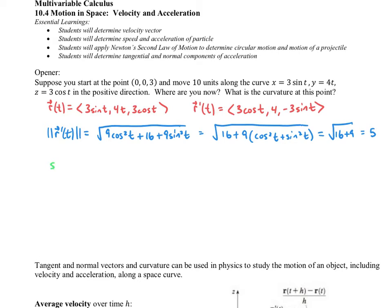The next step is to look at the arc length with respect to T, which is the integral from 0 up to some value T. We're looking at the point (0, 0, 3), and comparing with the x, y, z values in the given problem, we can see that T equals 0 satisfies that point. So we integrate 5 from 0 to T using du as a placeholder, and that gives us the antiderivative evaluated from 0 to T, which is just 5T. So we have S equal to 5T.